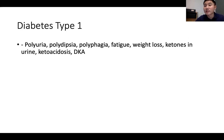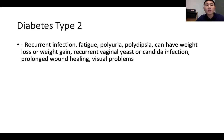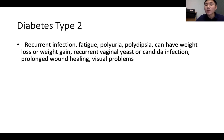Diabetes type 1 signs and symptoms: remember the three P's — polyuria (excessive urine), polyphagia (excessive appetite), and polydipsia (excessive thirst). Also fatigue, weight loss, ketones in the urine, and DKA. The key difference between type 1 and type 2 is ketones — only type 1 has ketones. Diabetes type 2: recurrent infections — such as vaginal candidiasis or yeast infections — fatigue, three P's, weight loss, prolonged wound healing, and visual problems. Recurrent infection is unique to type 2.